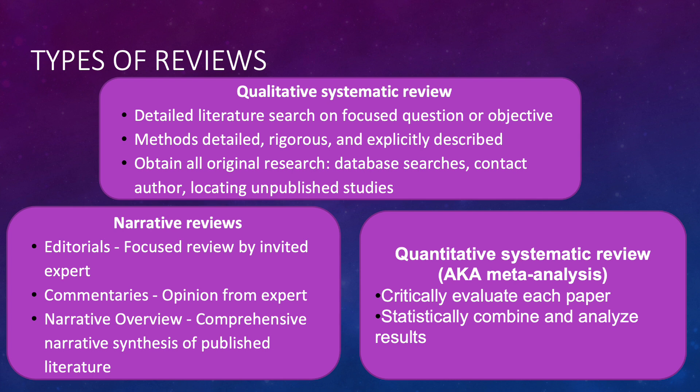Reviews can be systematic or narrative. As implied by the name, systematic reviews are very detailed and try to get all the literature on a particular topic. They have a very detailed methodology used to find all of the research on that topic. They can be qualitative, which just reviews all the literature, or quantitative, also known as a meta-analysis, where you combine the statistical analysis from each paper and do an overall analysis.